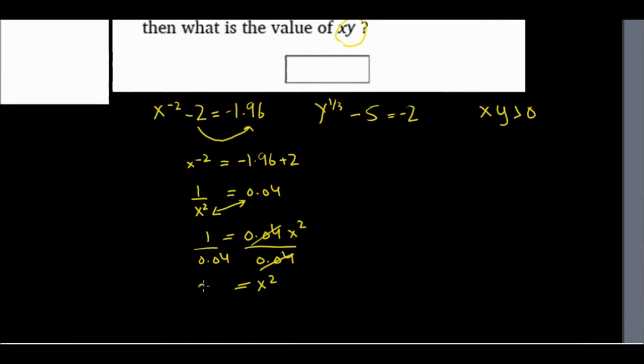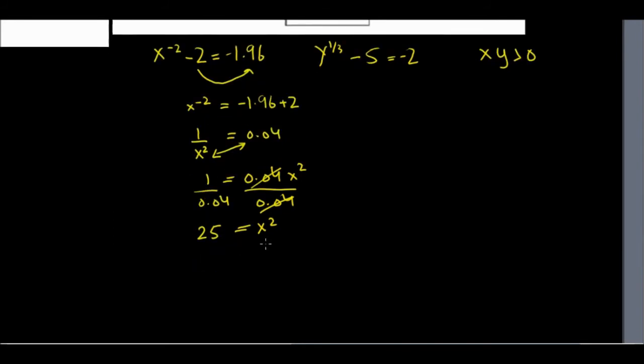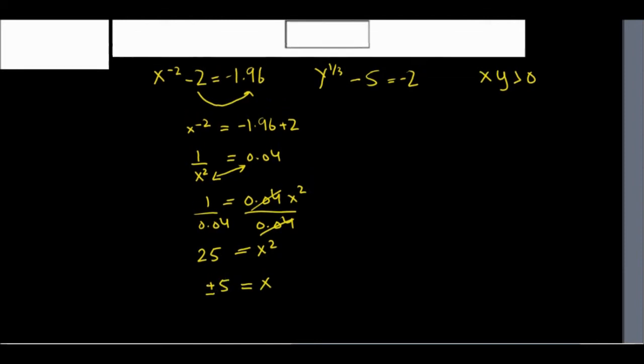And on the left, 1 divided by 0.04 will give me 25. Now, to get x by itself, I can take the square root and I'll get x equals either positive or negative 5. Remember, whenever you take square roots, you can have either a positive or negative value.